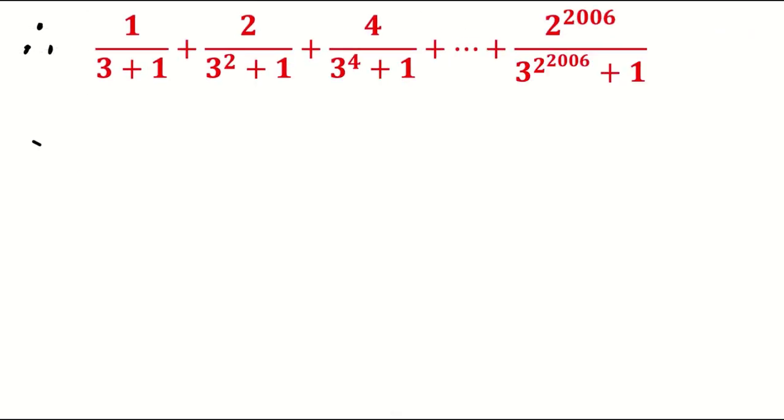Therefore, the sum of the given series is a summation of 2 to the power of n over 3 to the power of 2 to the power of n plus 1, from n equal to 0 to 2006.